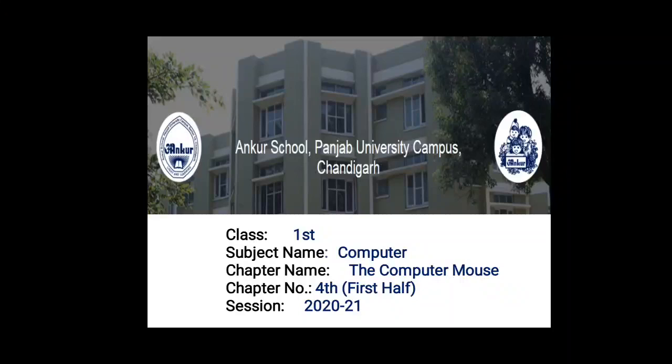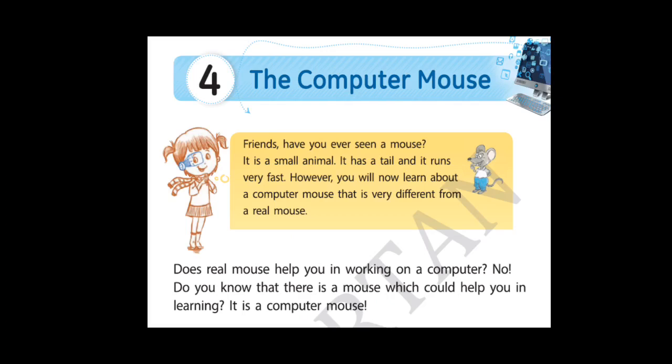In this chapter number 4, we will learn about the computer mouse. So let's start. Have you ever seen a real mouse? Yes, it is a small animal. It has a tail and it runs very fast. We all know. However, you will now learn about a computer mouse that is very different from a real mouse.